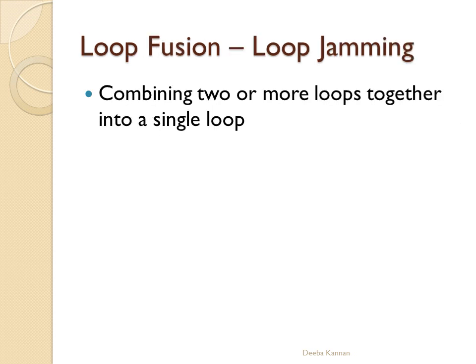The next optimization technique is loop fusion, also called loop jamming. Instead of 2 or 3 loops, we can have a single loop perform the same operations. The semantic meaning of the code must not be changed — in all optimization techniques, the meaning of the code should remain the same. If we can combine 2 or 3 loops together, that is more efficient; instead of creating separate loop statements, a single loop can perform the same operations.